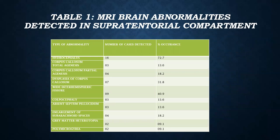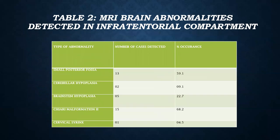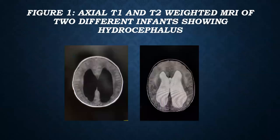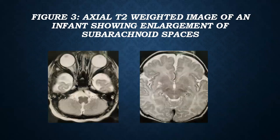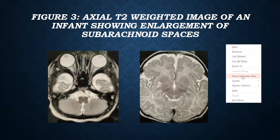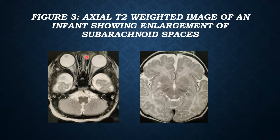Table 1 shows MRI abnormalities detected in the supratentorial compartment, where the most common finding is hydrocephalus seen in 16 patients. Table 2 shows MRI brain abnormalities detected in the infratentorial compartment, where the most common finding was Chiari malformation type 2 seen in 15 patients. Figure 1 shows axial T1 and T2 weighted MRI of two different infants showing hydrocephalus. Figure 2 shows an axial T1 weighted image of an infant showing absent septum pellucidum. Figure 3 shows an axial T2 weighted image of an infant showing enlargement of the subarachnoid spaces.